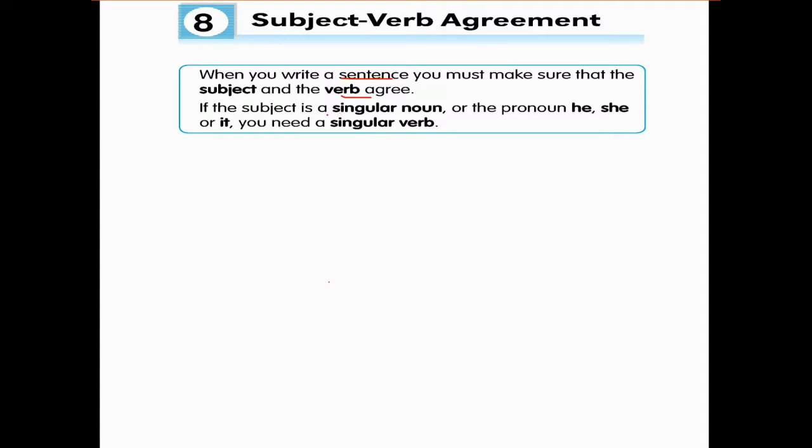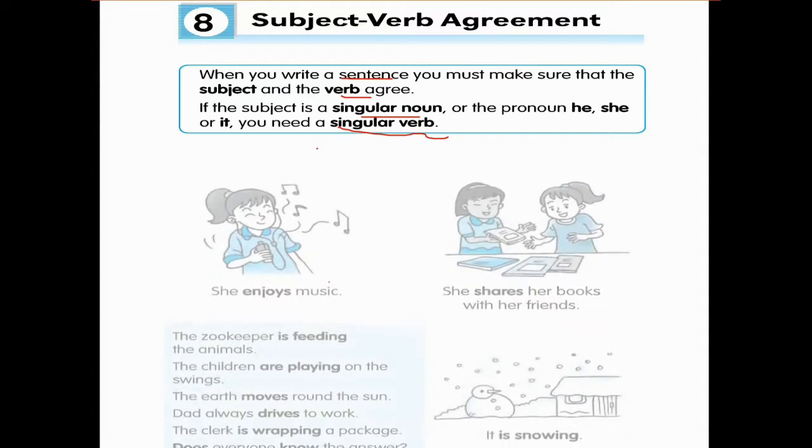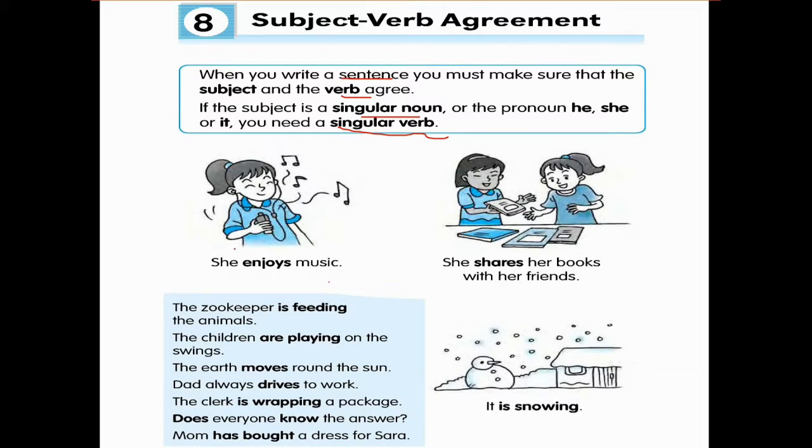If the subject is a singular noun or the pronoun like he, she, or it, you need a singular verb. This is singular, so we need to use singular verbs like she enjoys music, she enjoys music and she shares her book with her friends.